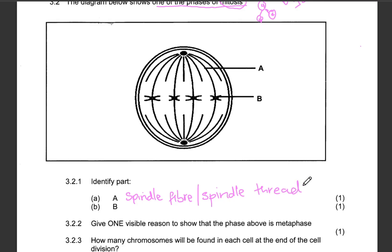Identify part B. Part B is pointing at the point joining the chromatids. Joining the chromatids is obviously the centromere. So part B is the centromere.